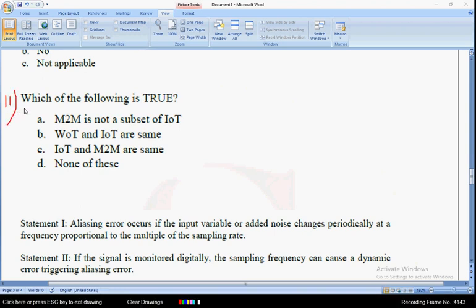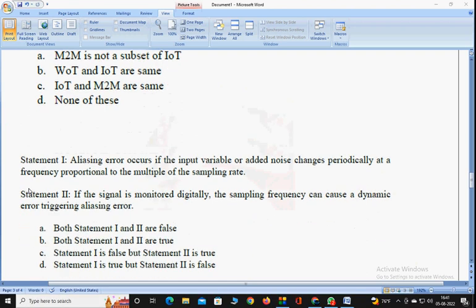The eleventh question: which of the following is true? Here first they have given M2M is not a subset of IoT, so it is wrong. WoT and IoT are same, it is also wrong. IoT and M2M are same, no, both are different, because M2M is a subset of IoT. In the first option they have given it is not a subset of IoT, so all three statements are wrong. WoT and IoT are also not same, so the answer is none of these. So for the eleventh question, the fourth option is correct.